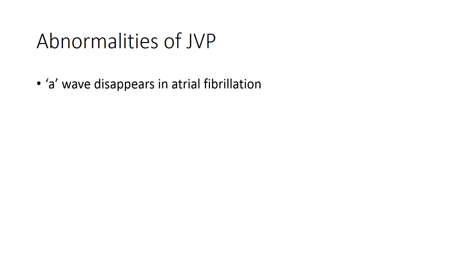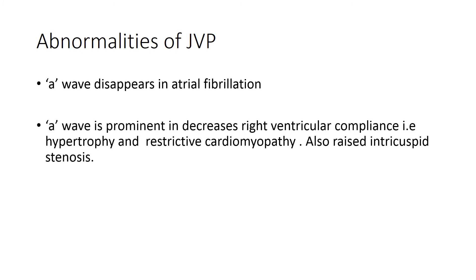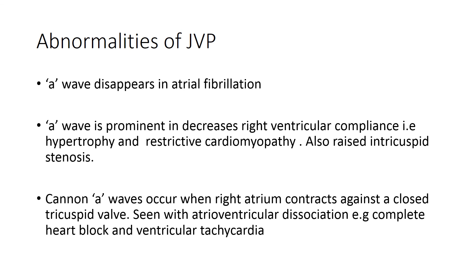Abnormalities of the jugular venous pulsations: the A wave can disappear in situations where the atria is not contracting, such as in atrial fibrillation. The A wave can become prominent when the right ventricle is resisting the flow of blood from the right atrium, such as in right ventricular hypertrophy from pulmonary hypertension, restrictive cardiomyopathy, and tricuspid stenosis. Canon A waves are very tall A waves seen when the right atrium contracts against a closed tricuspid valve, as occurs in atrioventricular dissociation, complete heart block, and ventricular tachycardia.